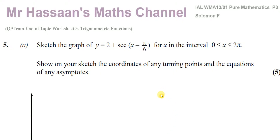Welcome back to Mr Hassan's Maths channel. In this video I'm going to be answering question number five from the Solomon F collection of P3, or the old C3 papers. This question corresponds to question number nine from my end of topic worksheet for chapter three of the P3 EdExcel book. It's a question about trig functions and we have to sketch the graph of the reciprocal trig function y equals two plus secant of x minus pi over six.